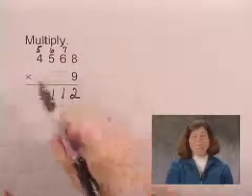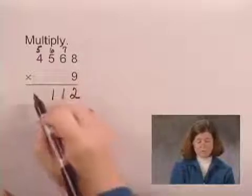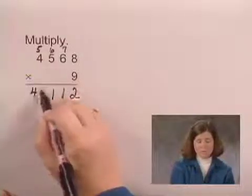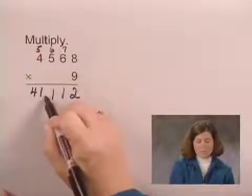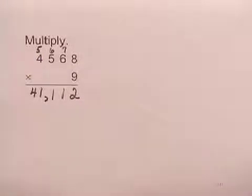Finally, we multiply 9 times 4 is 36. 36 plus 5 is 41, and we write the 41 below. And we put a comma to separate the periods. So the product is 41,112.